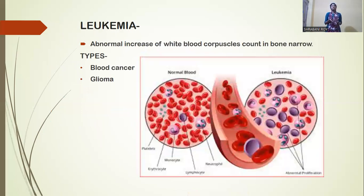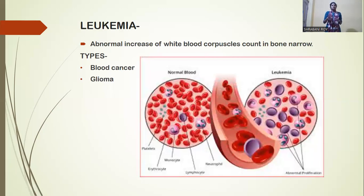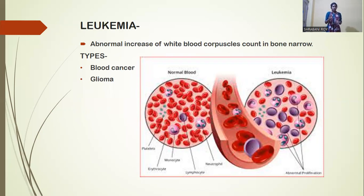The next type of cancer we call leukemia. This type of cancer occurs in our blood cells, where blood cells increase with uncontrolled division. Our blood is composed of two types of blood cells: white blood cells and red blood cells. This type of cancer occurs in our white blood corpuscles.